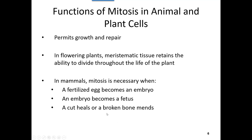Some species also use mitosis for asexual reproduction. Not all organisms have male and female counterparts, so all their replication is through mitosis — constantly making more copies of themselves. Bacteria are a common example: there's no male and female bacteria deciding to have offspring; they are just constantly growing and dividing.